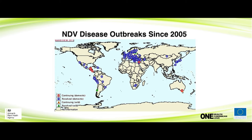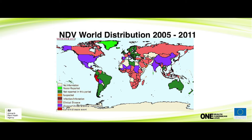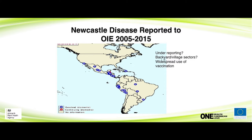Looking at geographic distribution — outbreaks reported to the OIE since 2005 — the Americas do have a number of outbreaks. There are countries in this region that never report Newcastle disease, which is curious given shared land boundaries and sizeable poultry populations. That may indicate a very efficient vaccination program. There are other countries that quite regularly report cases. For the Caribbean, this is essentially a rare virus, though there is a question of under-reporting, as quite a lot of cases occur in the backyard and village sector, and there is widespread use of vaccination.